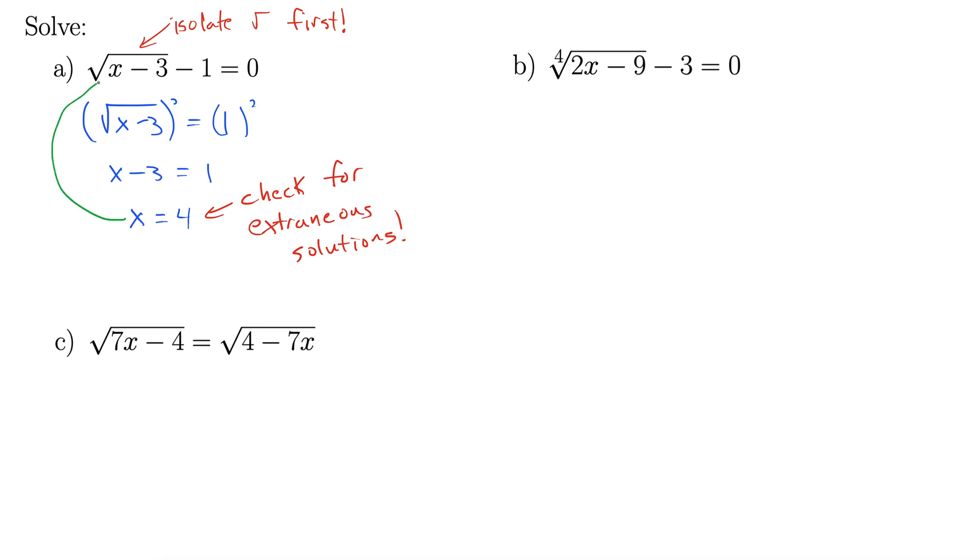Okay, so let's check this here. We're plugging into the original. And by the way, you always want to check in the original, right? Because that's where it could go wrong for these equations. So let's see. Square root of 4 minus 3 minus 1, does that equal 0? Oh yeah. Square root of 1 minus 1, that does equal 0. Okay, so this works. So this here is indeed our answer.